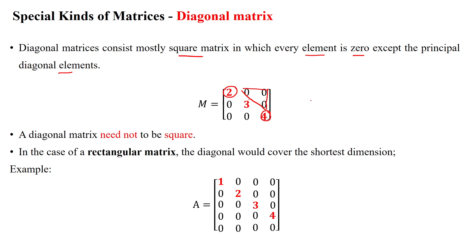If it is an identity matrix, all diagonal elements will be ones and all other elements will be zeros. So this is about the identity matrix. The diagonal matrix need not always be square. One special kind is the rectangular matrix, in which we can also find the diagonal values that cover the shortest dimension.